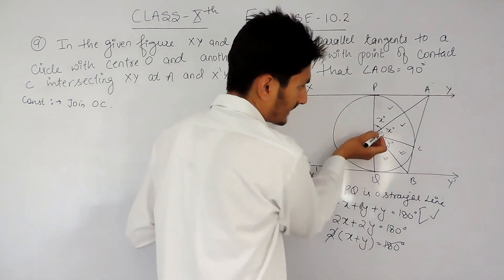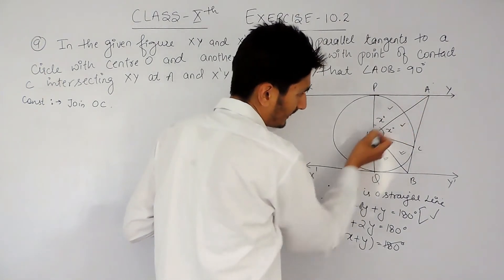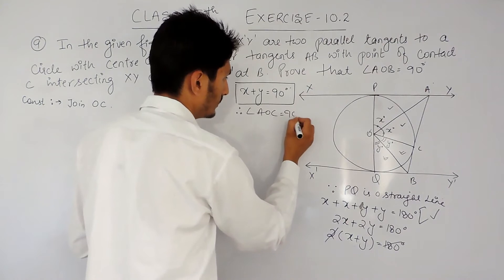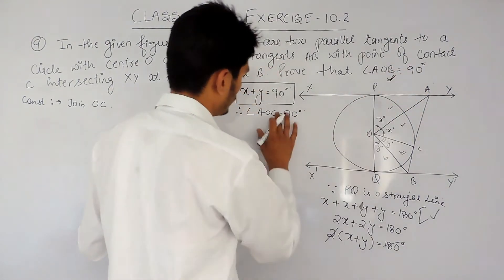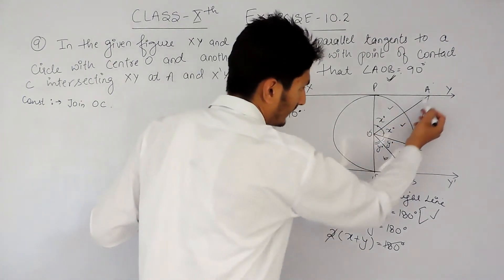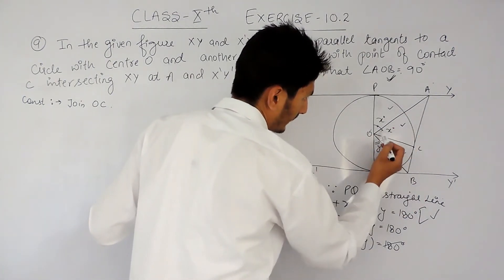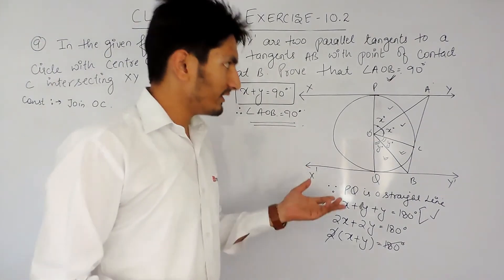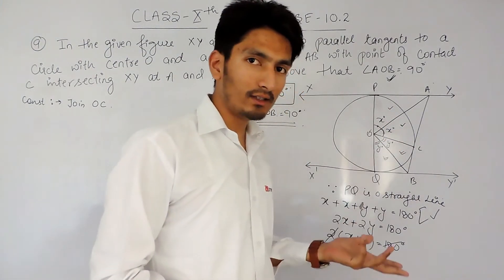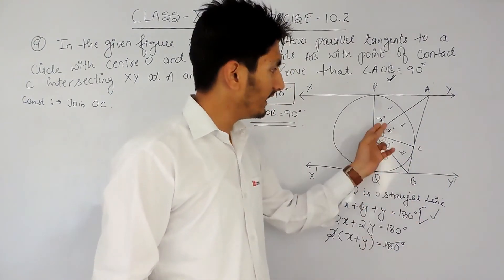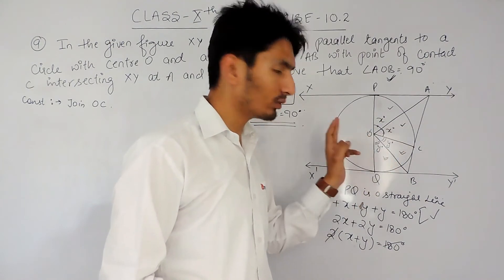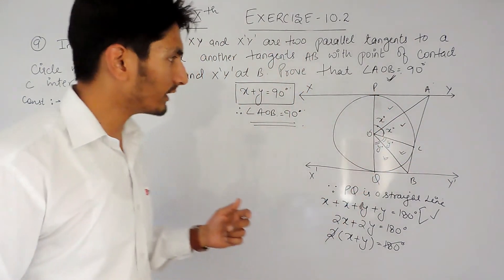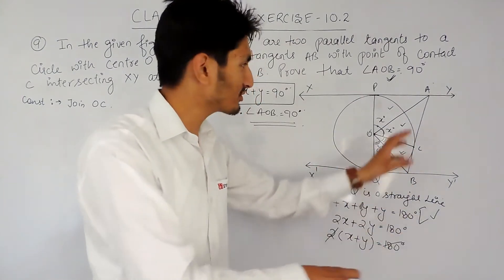This angle x plus this angle y is nothing but angle AOB. Therefore, angle AOB is equal to 90 degrees — this is what we need to prove. Now, obviously we need to prove those two pairs of triangles are congruent. Let's go through how to prove that.